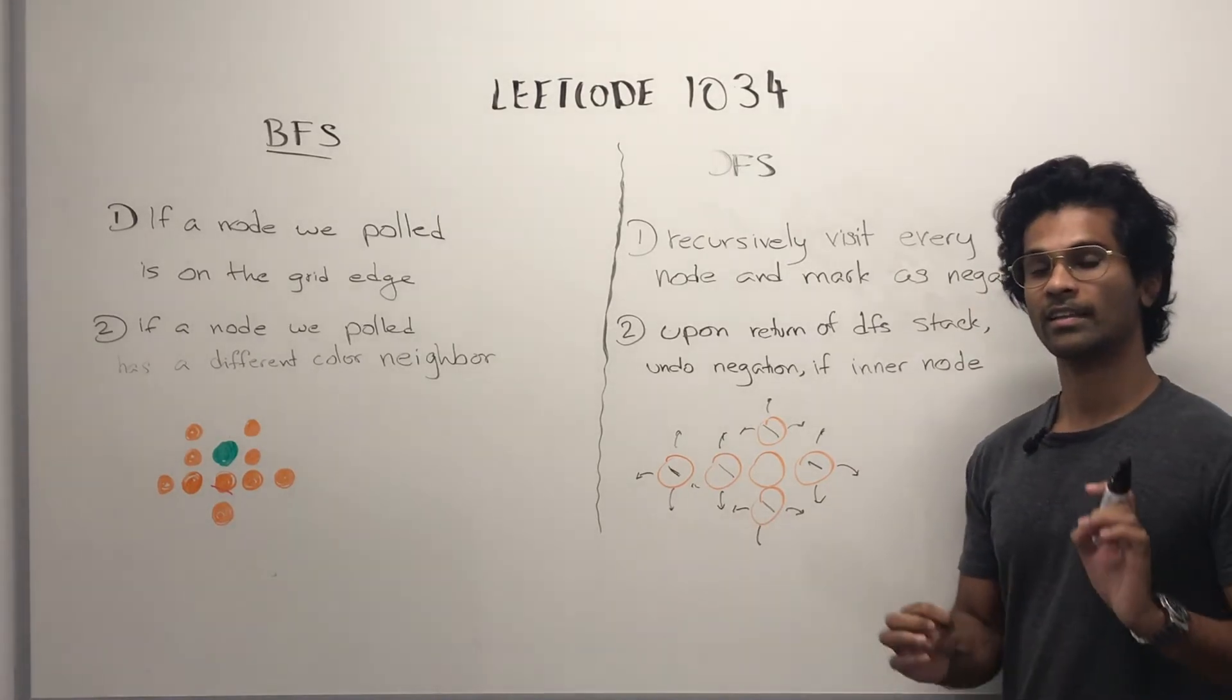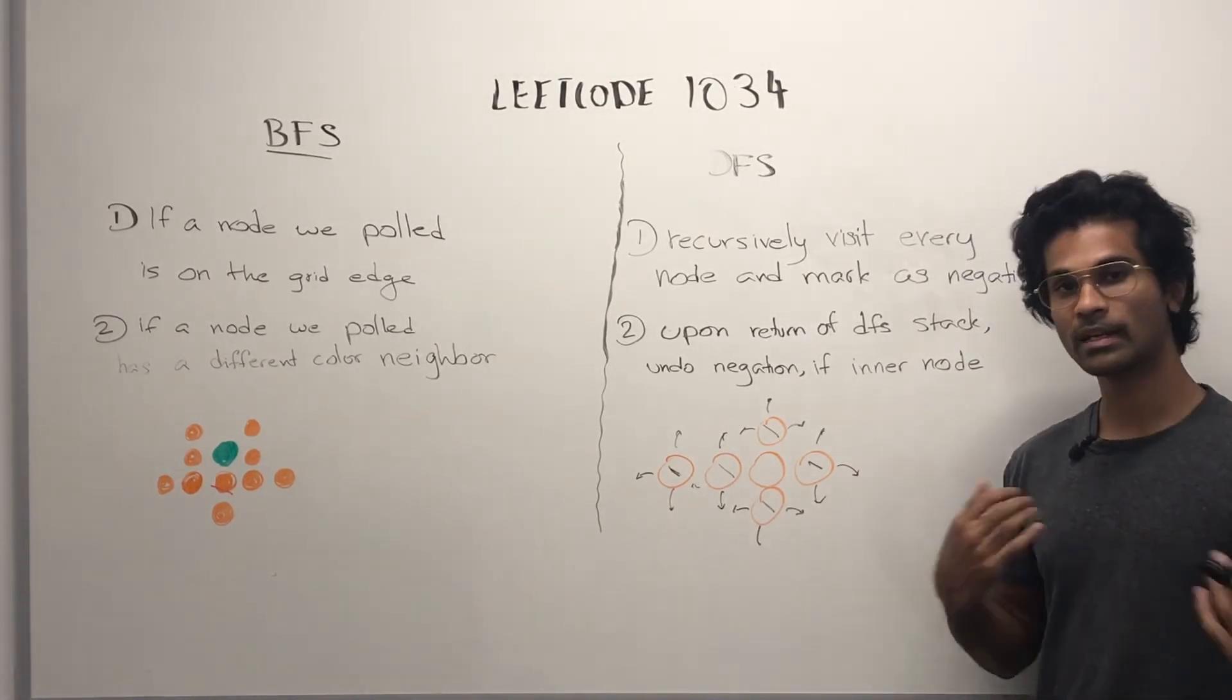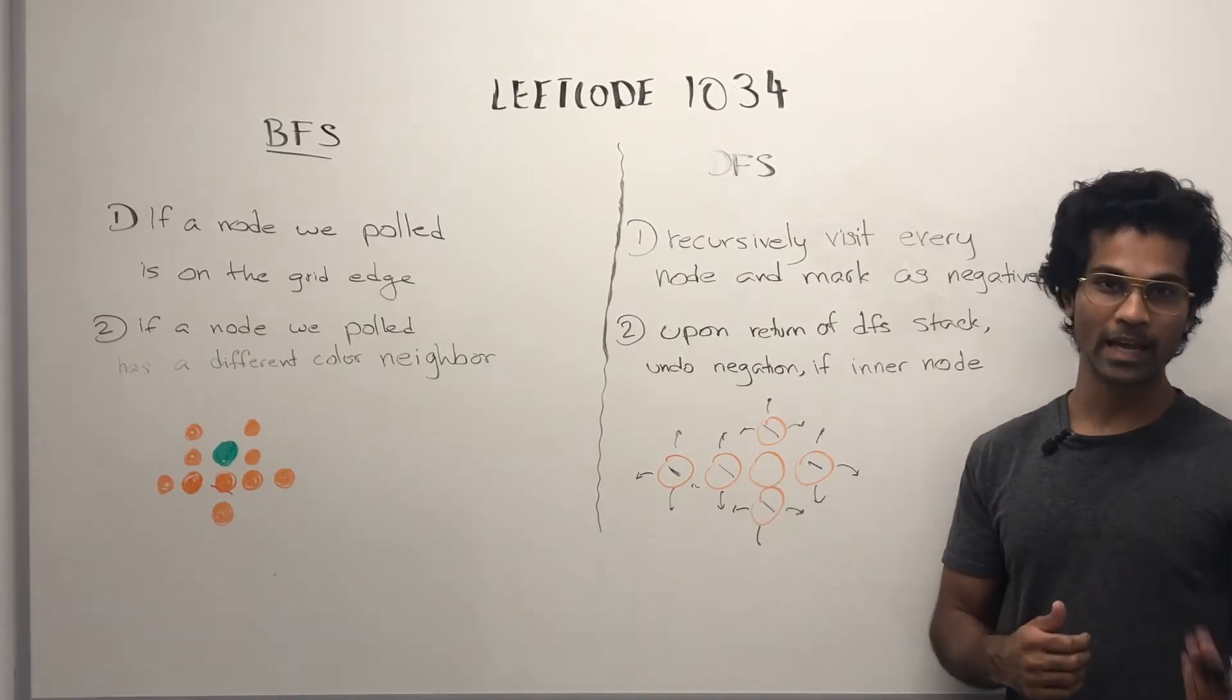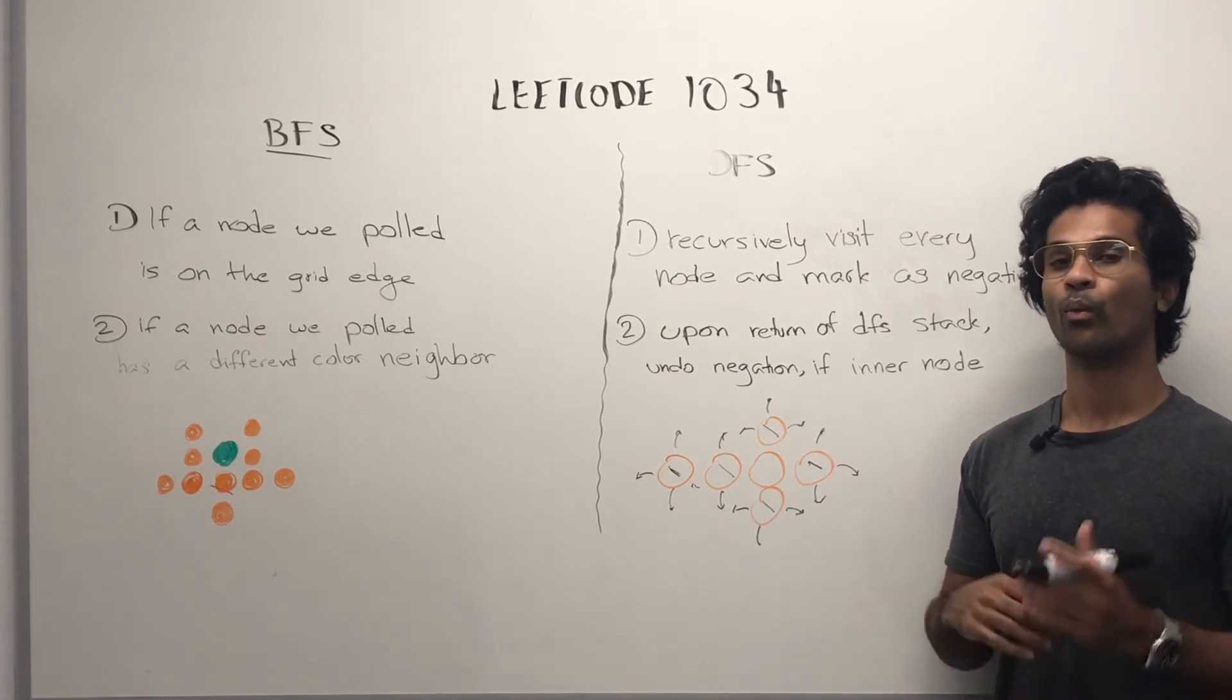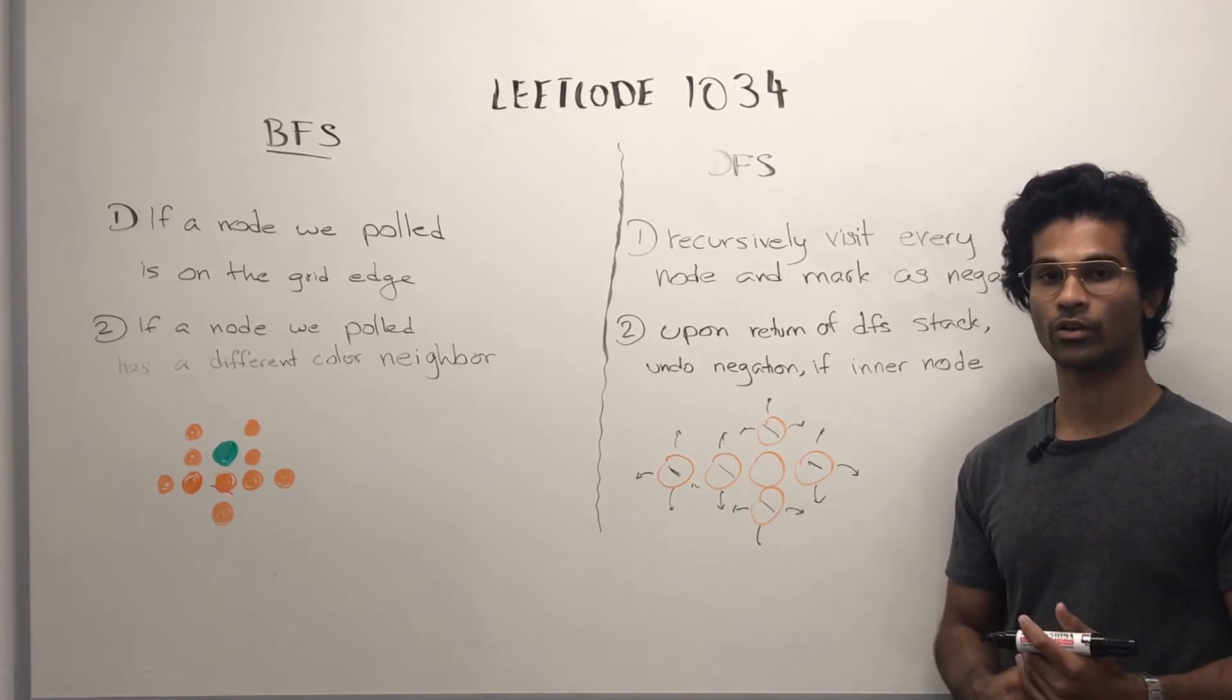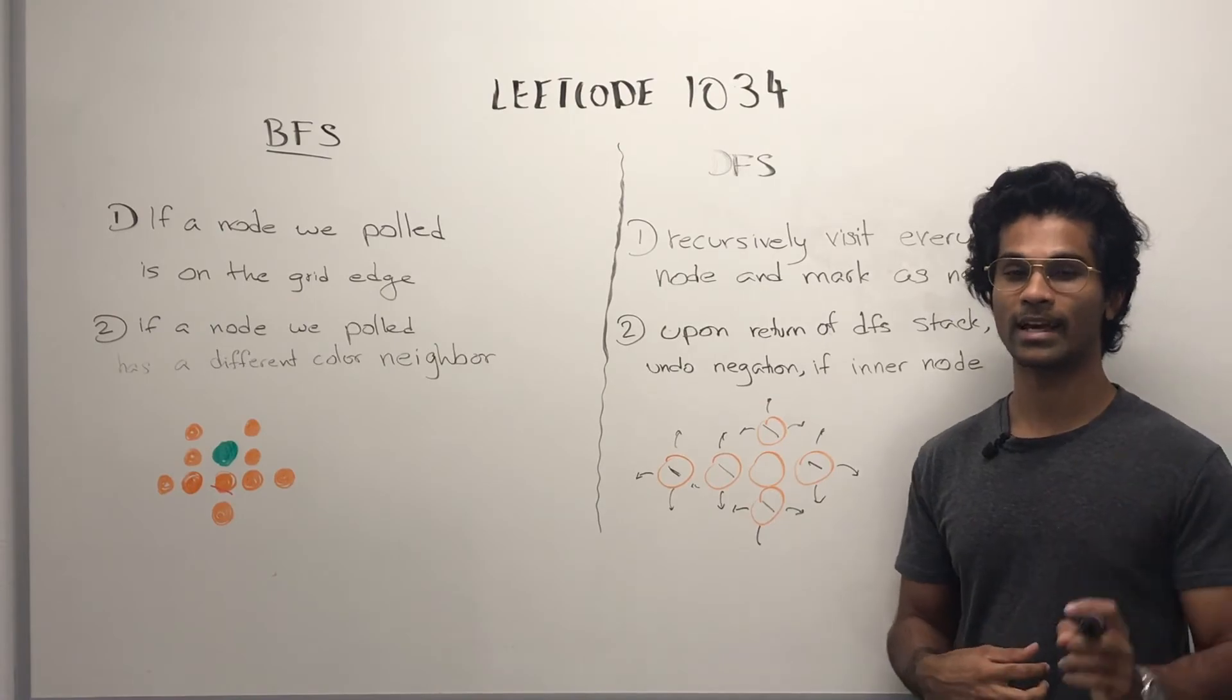And the recursive stack fully comes back. So, you see that all the outer nodes, or the border nodes, are the ones that have been negated. And all the inner nodes are going to negate and unnegate. So, what we do after doing all the negation is go back and change the colors to the new color for every node that's negative.